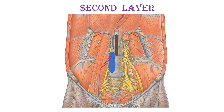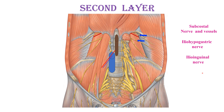In the second layer, these are groups of nerves and vessels in front of the first layer, in front of the muscles. Those are the subcostal nerve and vessels, coming from under the lateral arcuate ligament of the diaphragm, the iliohypogastric, and the ilioinguinal nerves. These three structures lie in front of the quadratus lumborum: the subcostal nerve and vessels, the iliohypogastric, and the ilioinguinal nerve.